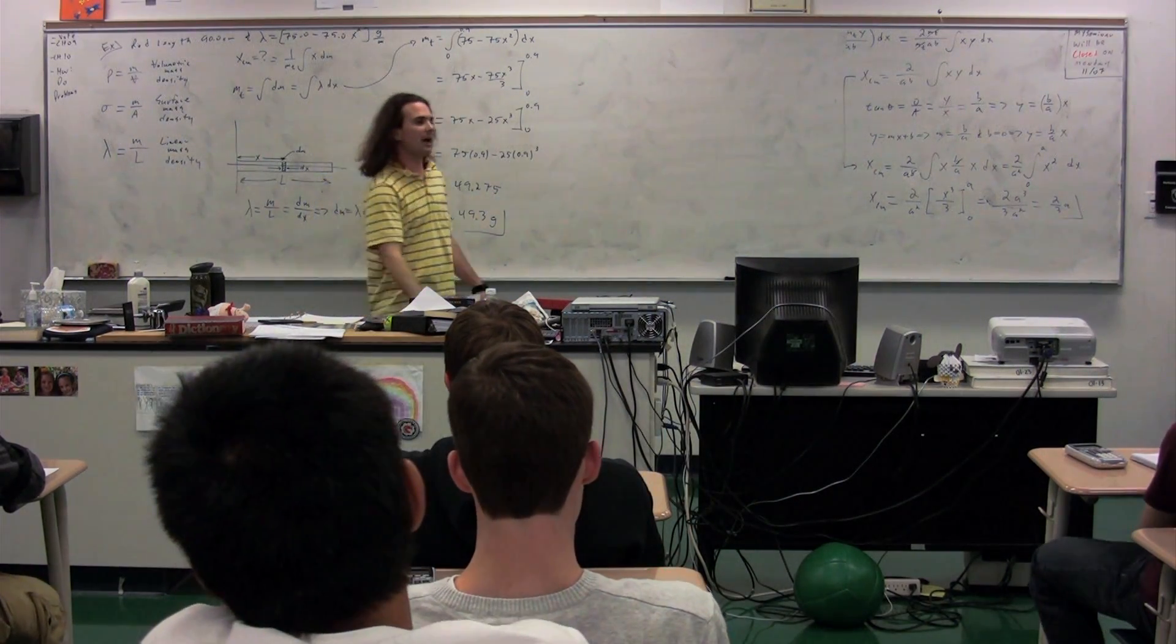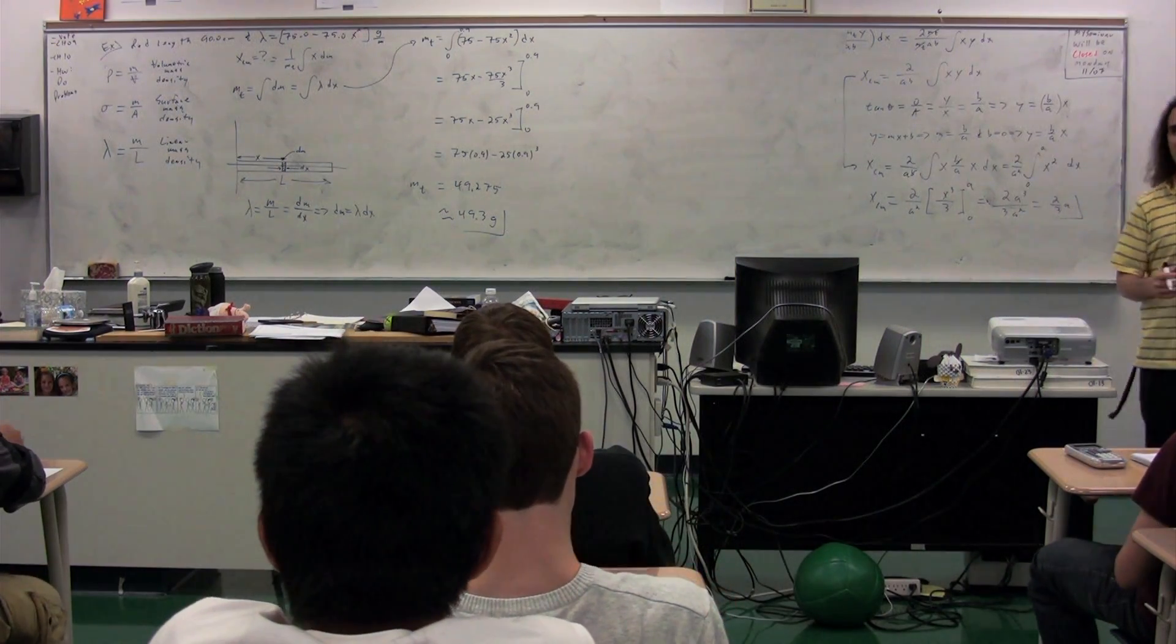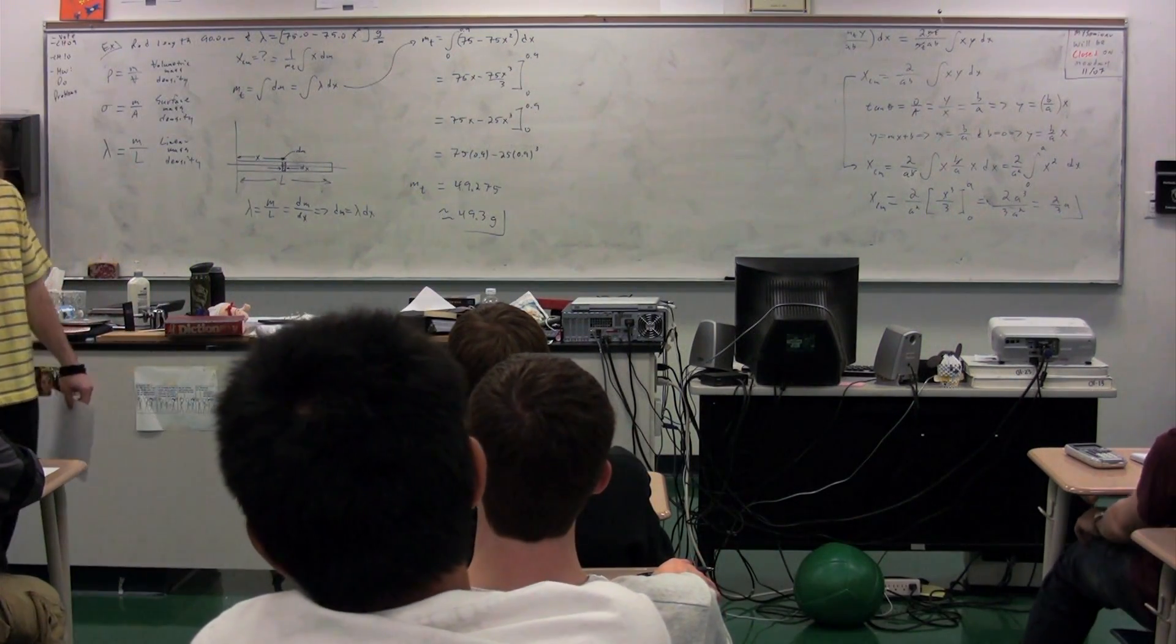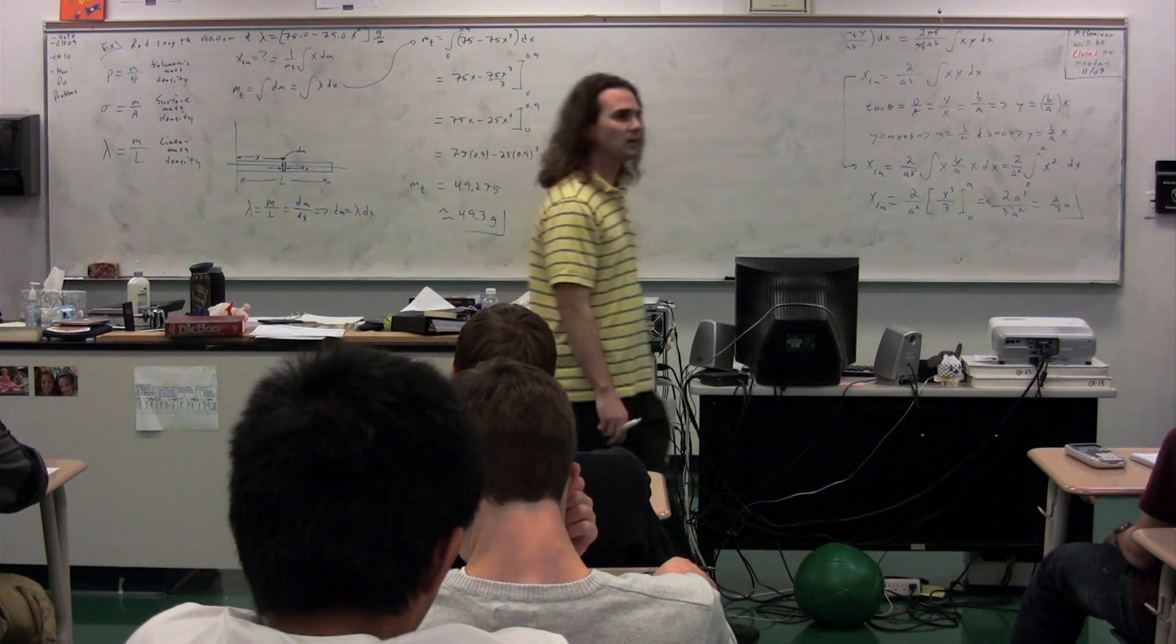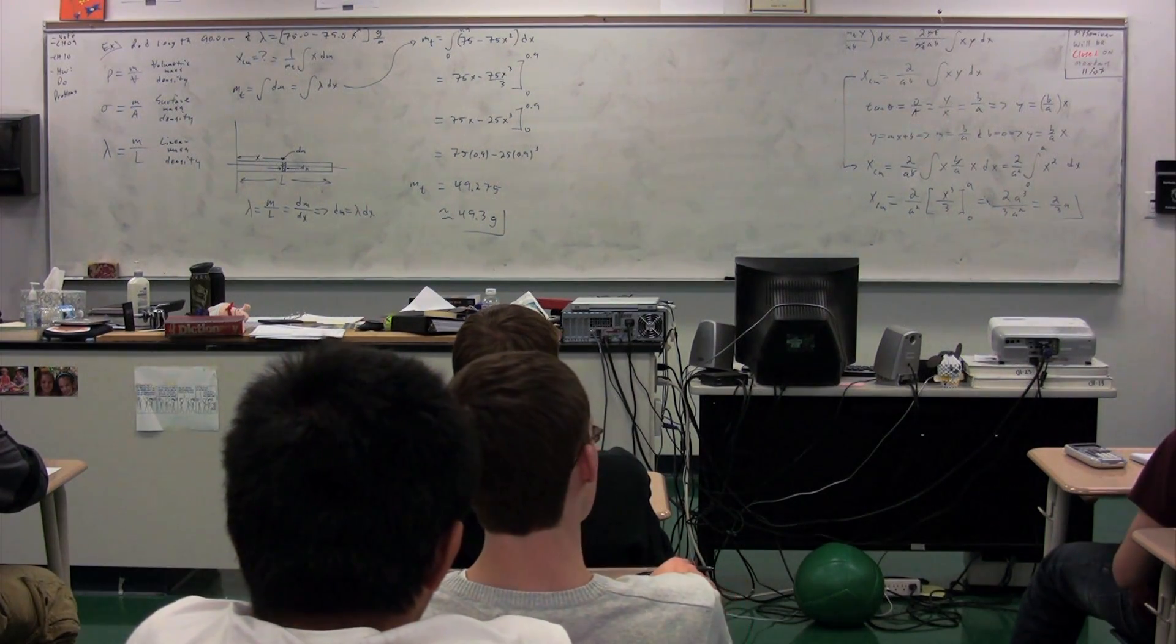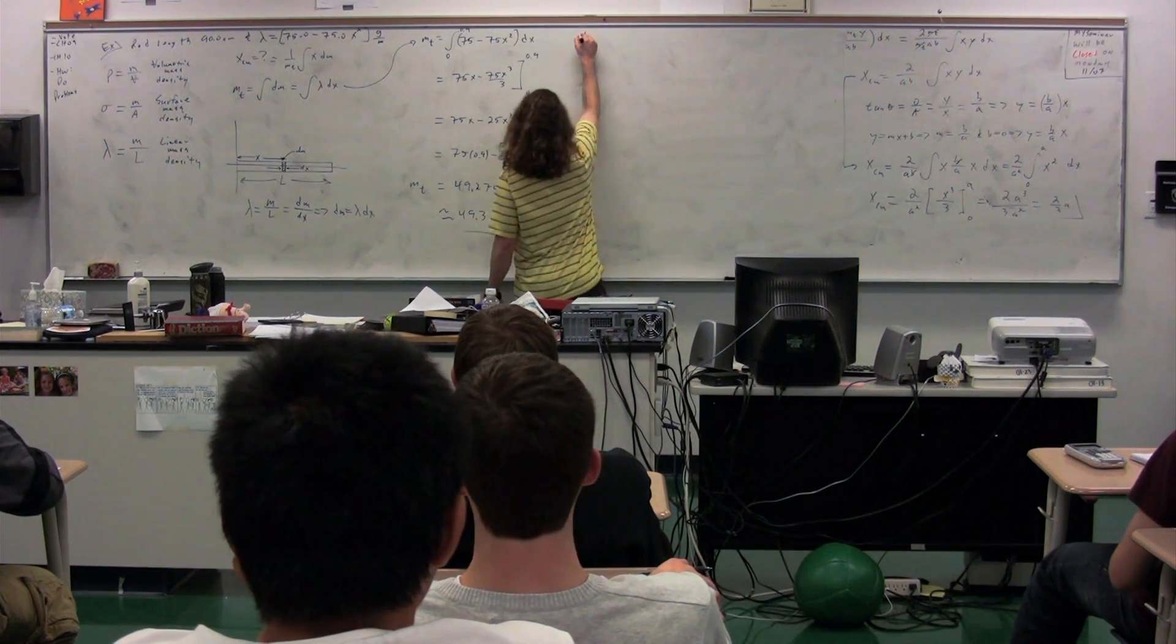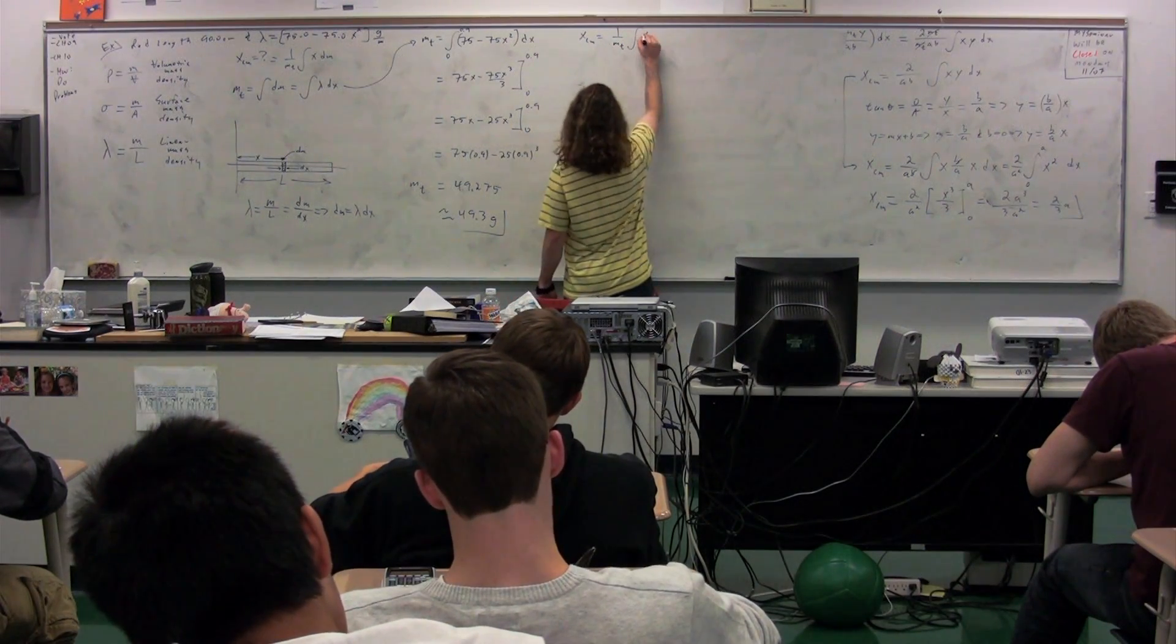We also want to figure out the x center of mass. You should be able to tell me something about the location of the x center of mass. Who can give me something about where we should expect this center of mass to be? Left of center. Left of center because? It's more dense on the left side. It decreases in density as we go from left to right. Therefore, we should expect the center of mass to be left of the geometric center of the object. Okay. So, x center of mass is equal to 1 over the mass total times the integral of x dm.